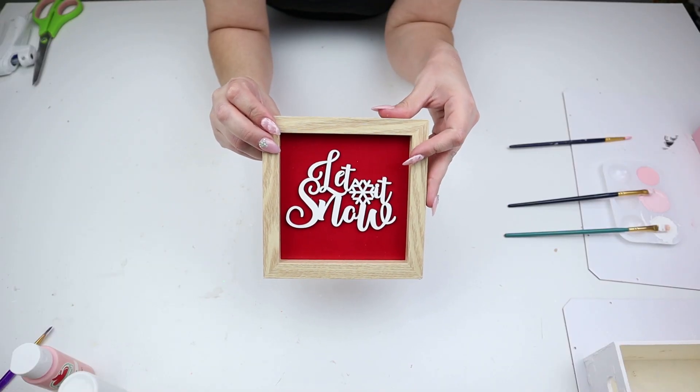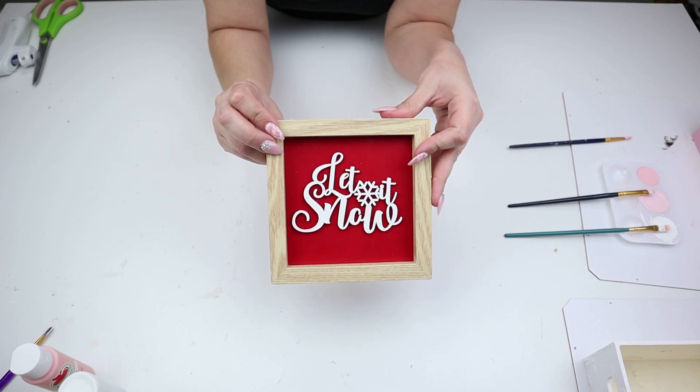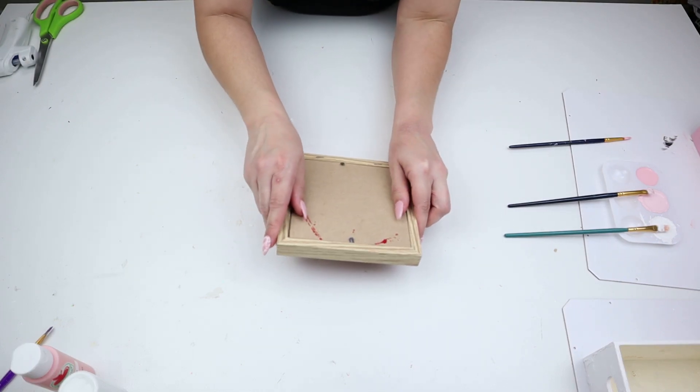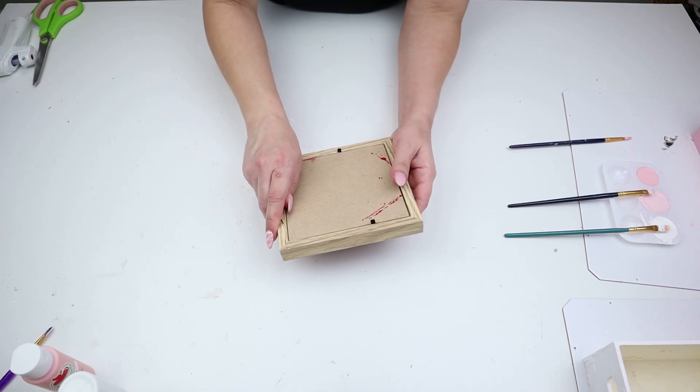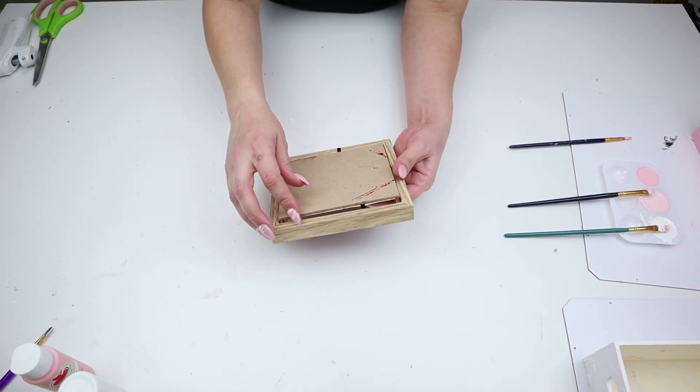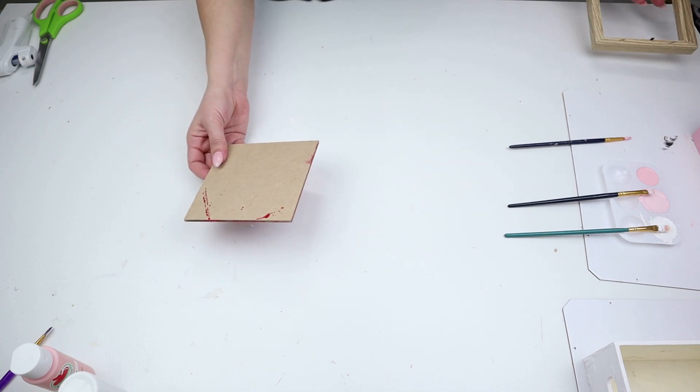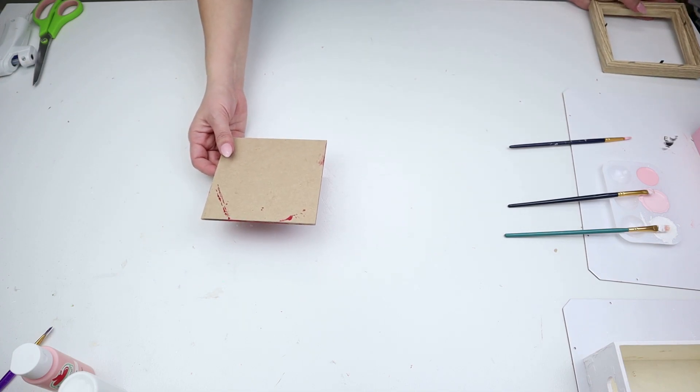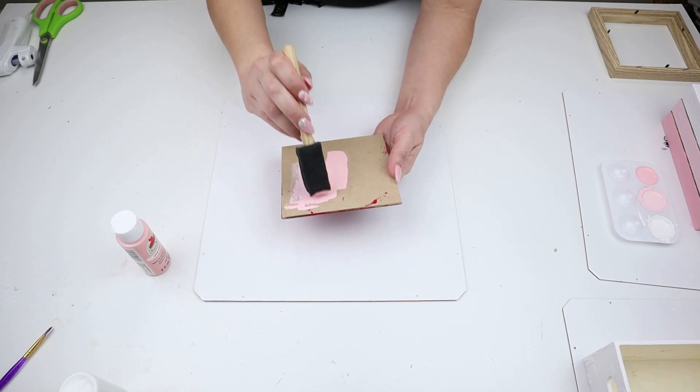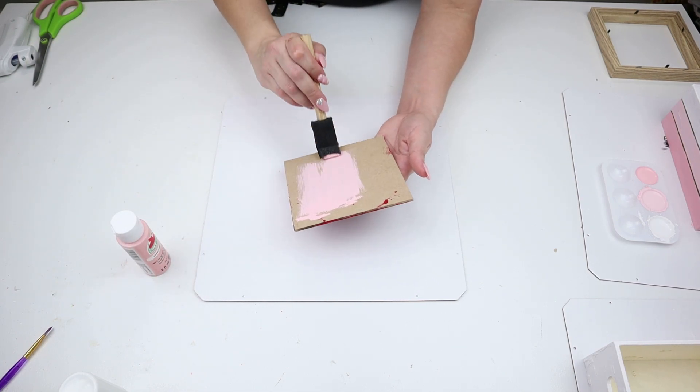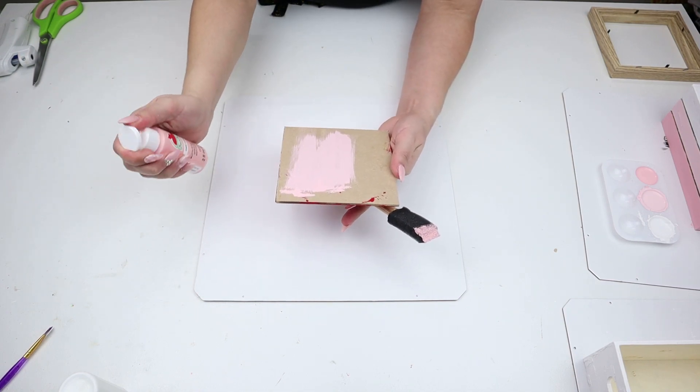For the next DIY, I'm going to be making over this let it snow sign that I made during Christmas time. I'm going to remove the inside of it and paint the back of it pink to create a Valentine's Day sign. This sign is so versatile because you can paint on both sides and reuse it. I don't have to mess up the side I created for Christmas. I can use that side during Christmas time next year and also use this side that I'm painting pink for Valentine's Day.